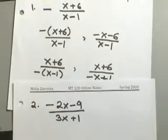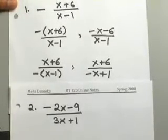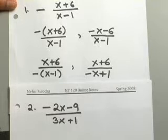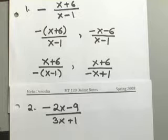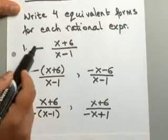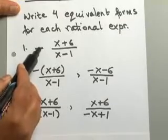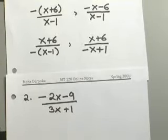You have negative 2x minus 9 over 3x plus 1. And you want to come up with four equivalent forms of this rational expression. So, what are you going to do here? Now, you can see this expression is a little bit different from the one we saw here. In this one, when we started out, the negative sign was in the middle. But here, you don't see a negative sign of that form.